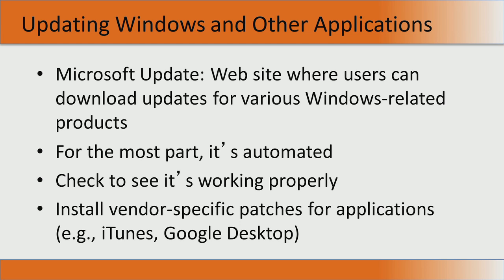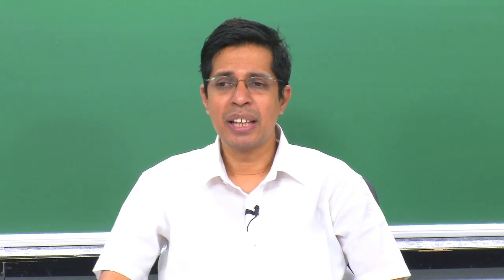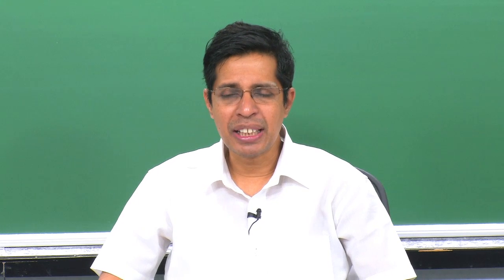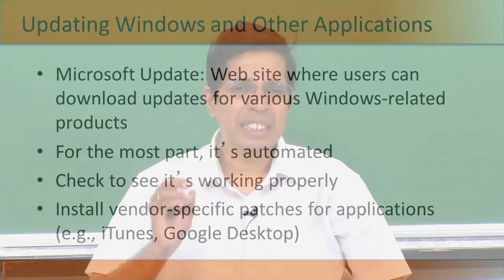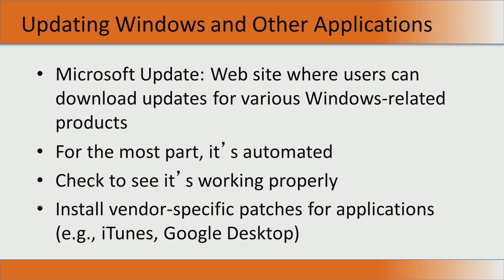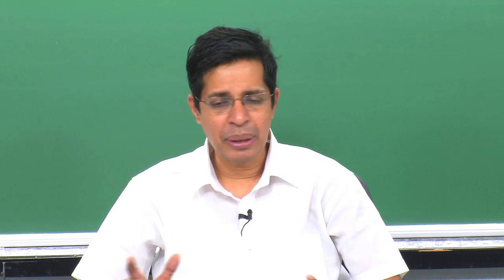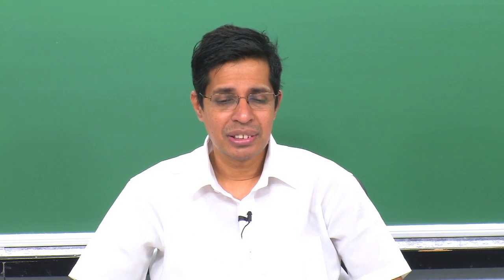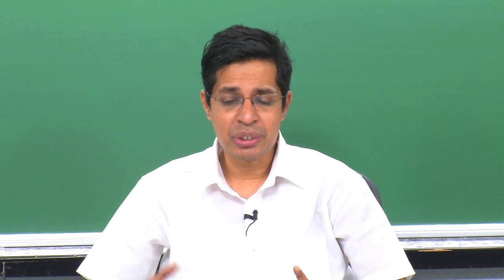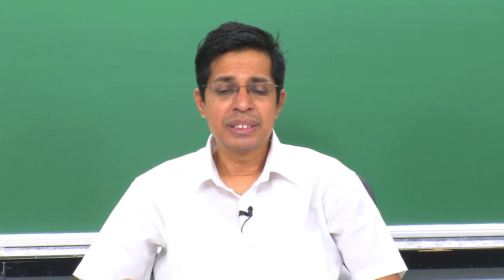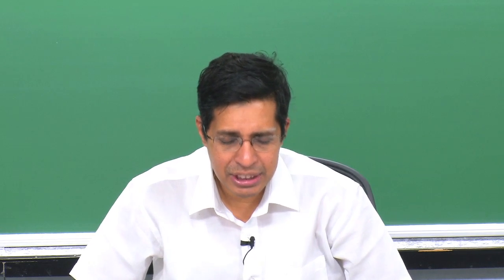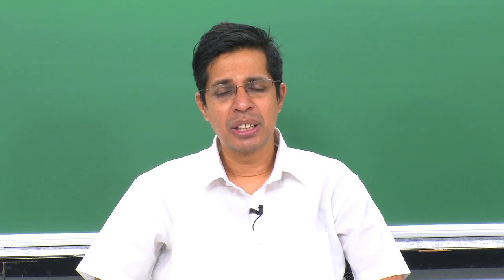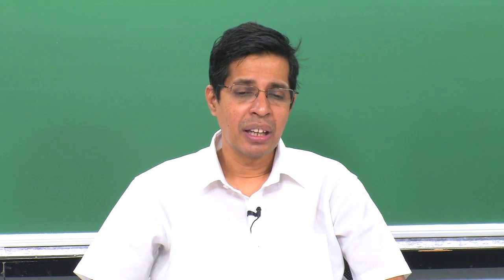Another important thing is to keep updating your operating system — update Windows and all other applications. Each update has something to do with security; a significant part of recent Microsoft updates fixes vulnerabilities. For the most part, updating a Microsoft operating system is automated, but you can check whether new patches are working properly. Similarly, for every software there are vendor-specific patches, and operating systems provide a quick way to update all of them.